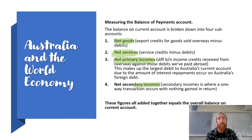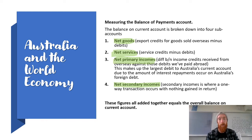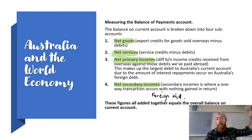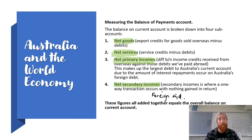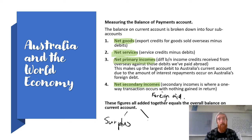The last sub-account is net secondary incomes, which covers one-way transactions with nothing gained in return — mainly foreign aid. There are mainly debits here as we are sending things overseas with no expectation of anything in return. Taking all four sub-accounts and adding the credits minus debits together gives us the overall balance on current account — either a surplus if credits outweigh debits, or a deficit if debits outweigh credits.